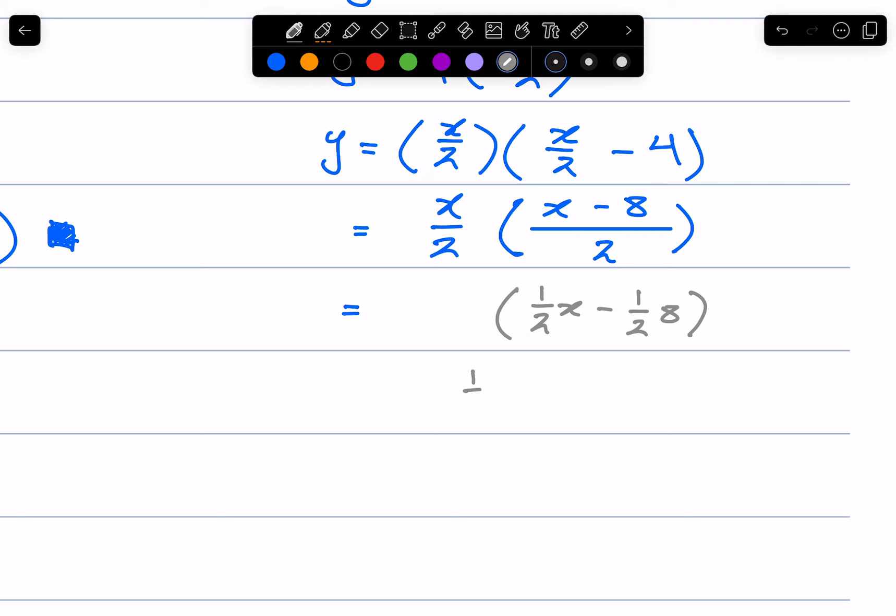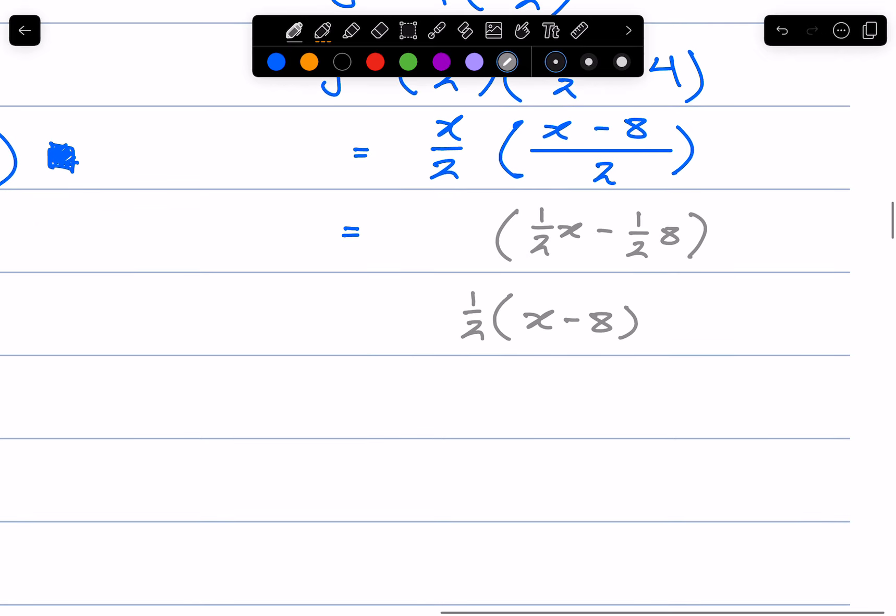Factoring out half, I get half on the outside, x minus 8. That half is going to multiply by that x over 2, which will give us x over 4, x minus 8.